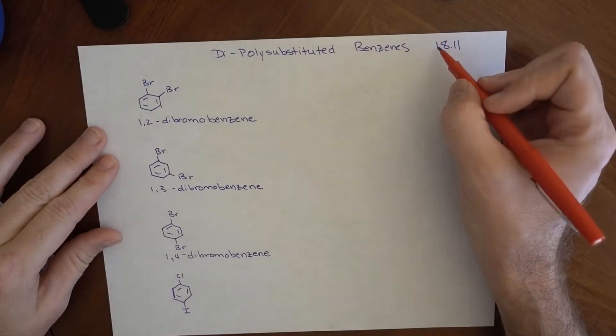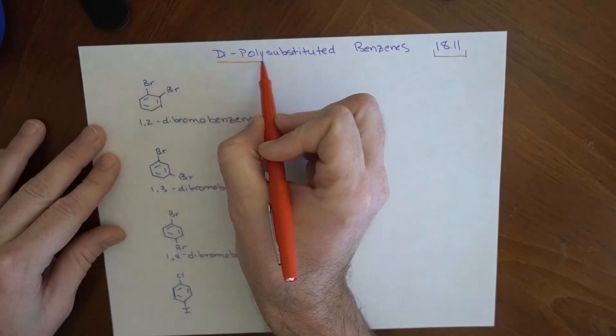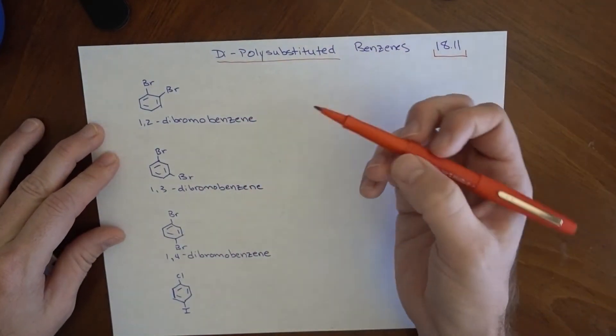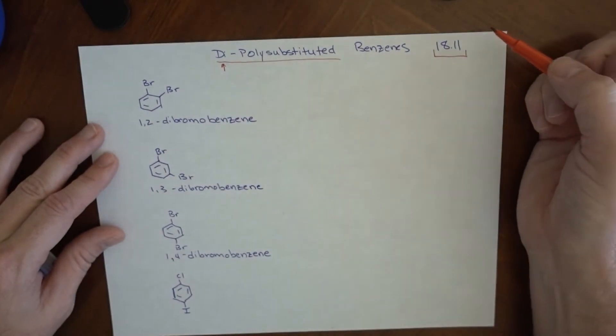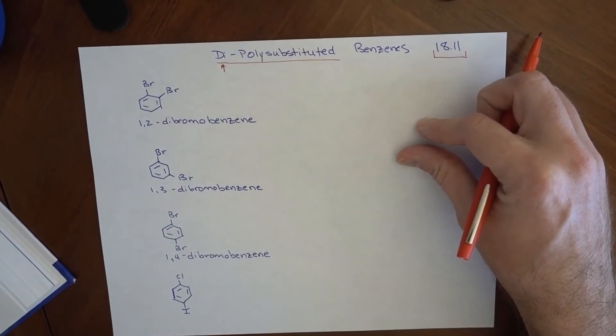Following along in Bruce, I'm going to jump all the way to 18.11, where they start to talk about di- and poly-substituted benzenes, and here I'm going to focus on the di-. If I have two things that are attached on this benzene here, zoom in just a touch.